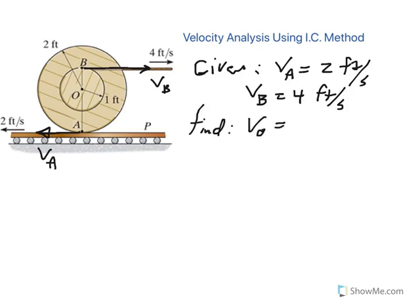And we want to use the instantaneous center approach. This is a special case where if you're given velocity of two points on a body and they're parallel to one another, in this case different magnitudes, but they're going in the opposite direction. So the way we locate the instantaneous center is by connecting A to B.